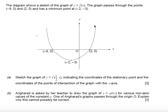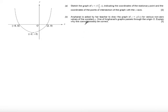In this question we're told the diagram shows a sketch of the graph y equals f of x. The graph passes through the points (-6, 0) and (2, 0) and has a minimum point at (-2, -3). We need to sketch the graph of y equals f(½x) indicating the coordinates of the stationary point and the coordinates of the points of intersection with the x-axis.